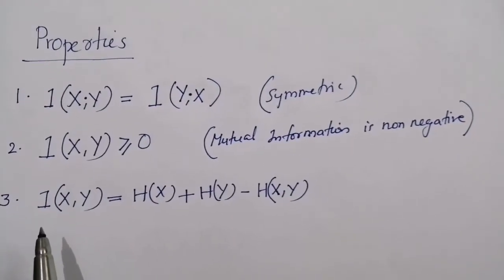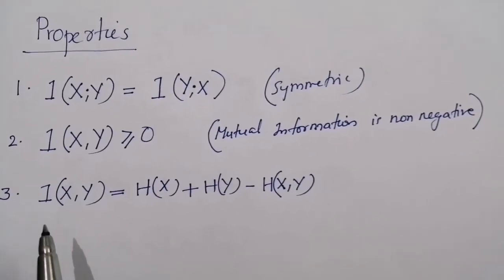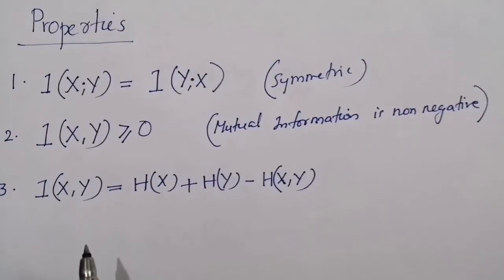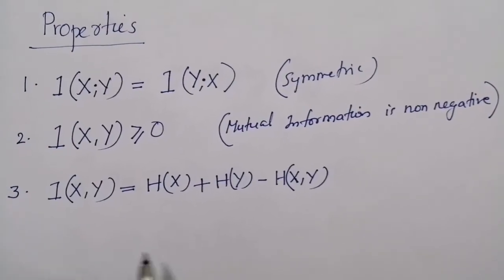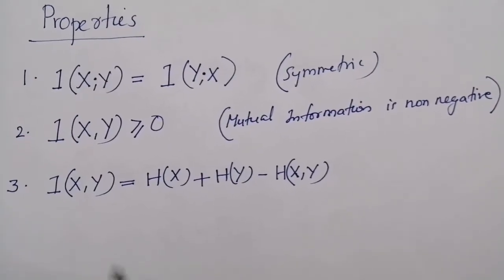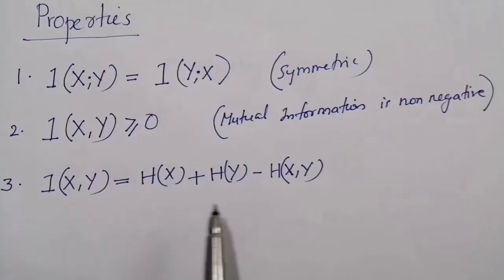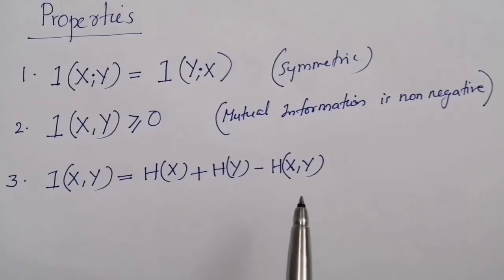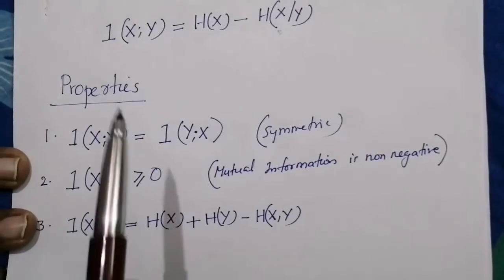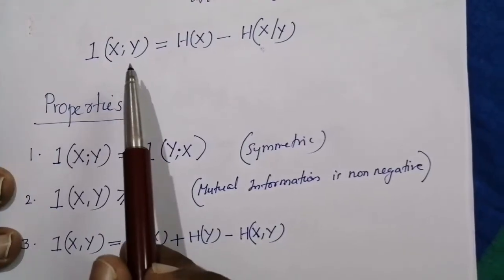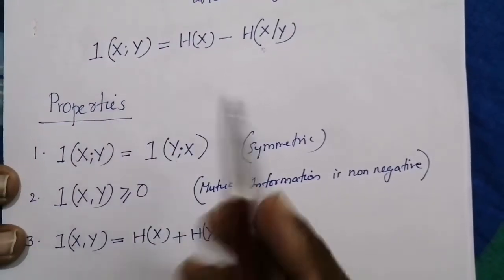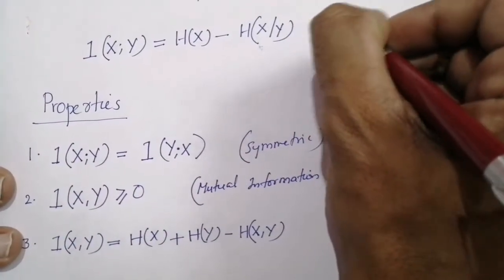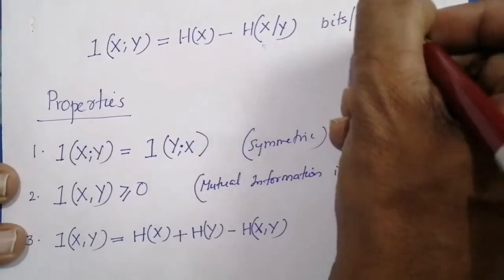Mutual information is related to the entropies h(x) and h(y) and the joint entropy h(x,y) as per the following relationship: I(x;y) = h(x) + h(y) - h(x,y). Mutual information is also called trans-information, and the unit is given by bits per symbol.